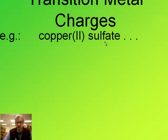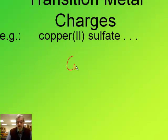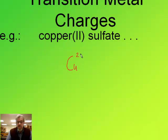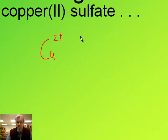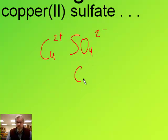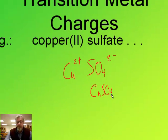Here's an example of a name of an entire compound: copper two sulfate. Because we have a two plus in there, that means Cu two plus. We know sulfate is SO4 two minus, so the formula for this would end up being CuSO4.